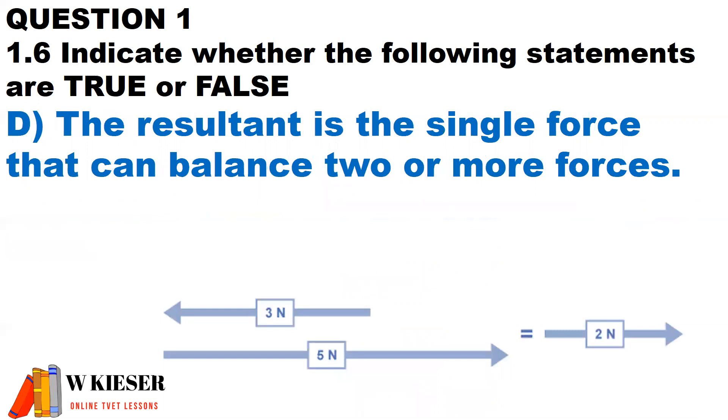In part D, the resultant is the single force that can balance two or more forces. We have a 5N force representing the 3N and the 2N. So in this case, 5N minus 3N would give us a balance or a total of 2N moving in an easterly direction. Therefore, this statement is true.